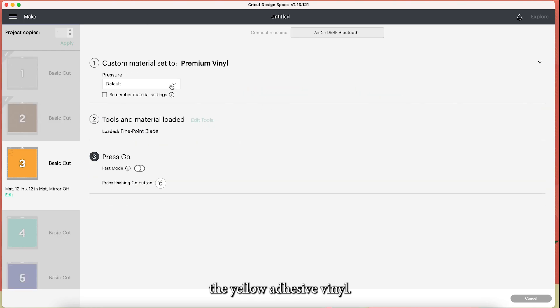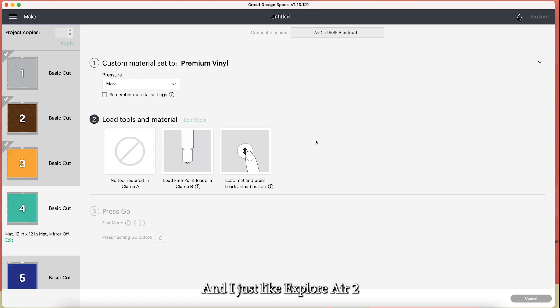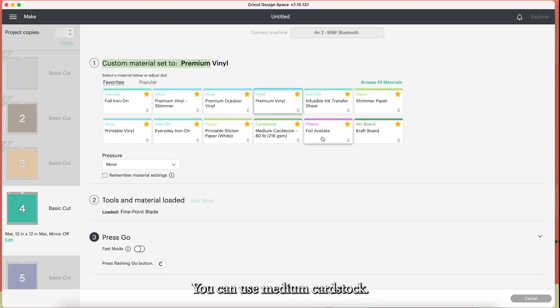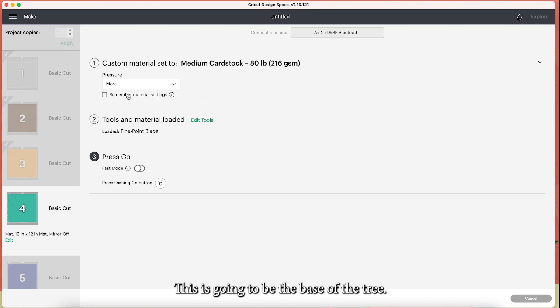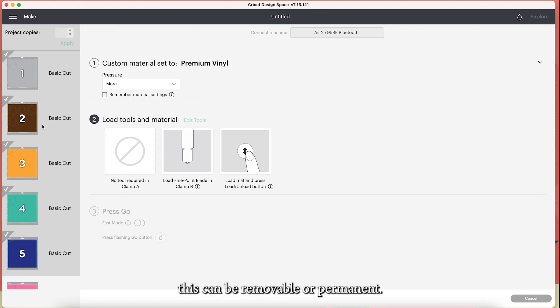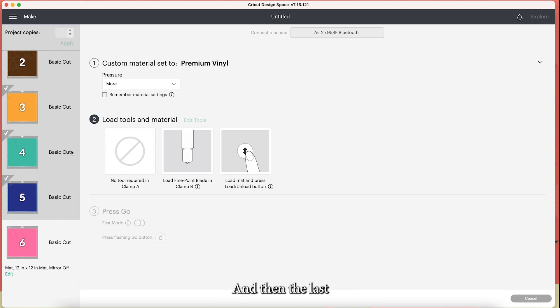So the next layer is the yellow adhesive vinyl. You can select Cricut premium vinyl for this and I just like Explore Air 2 to be cut on more. The teal or aqua is actually cardstock. You can use medium cardstock. This is going to be the base of the tree. And then after the aqua you have the navy which is another piece of vinyl that's like the Santa and his sleigh. So again Cricut premium vinyl for this. This can be removable or permanent. And then the last mat is the pink which is the last layer of the tree or the top layer and it's actually just a light pink cardstock. So again for this one we just want to pick cardstock.